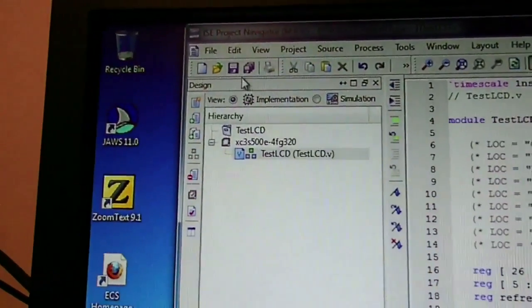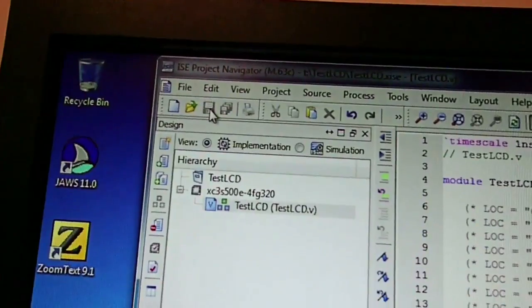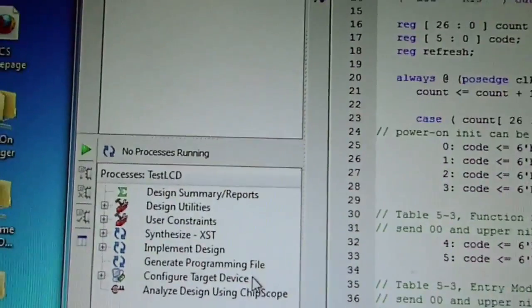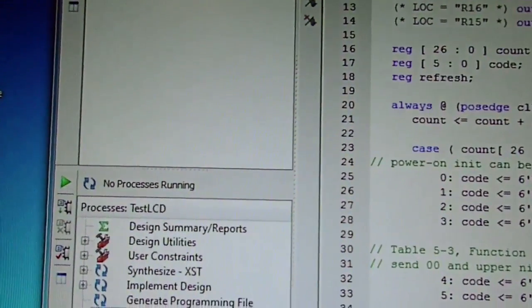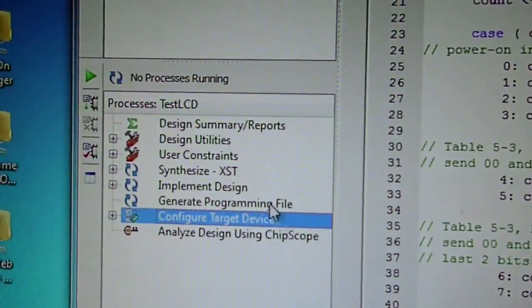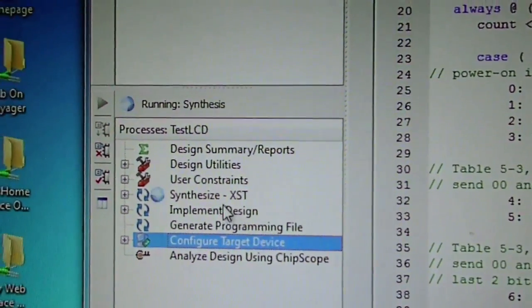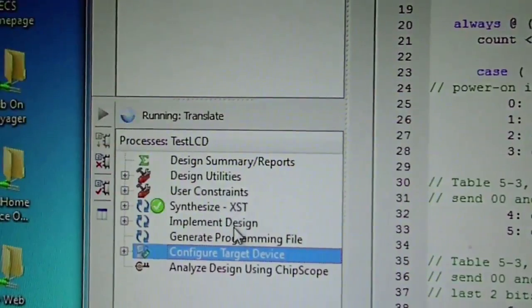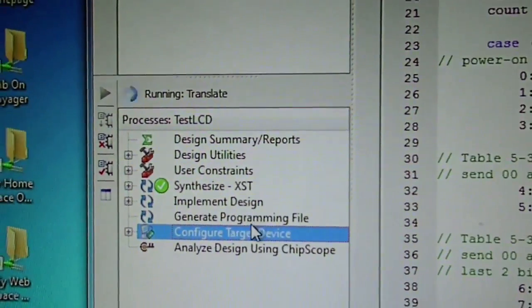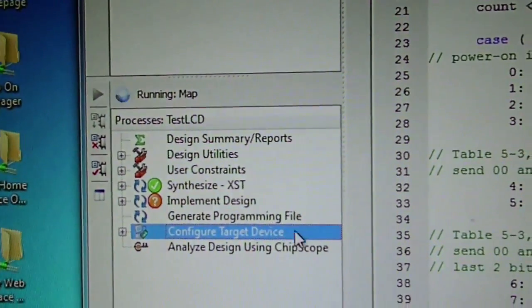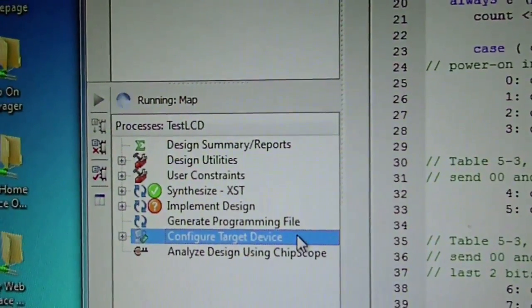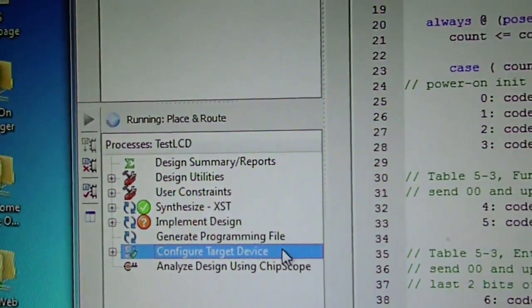We save this file and then compile by double-clicking the configure target device. It will go through synthesize XST, implement design, generate programming file, and come to configure target device. There it will stop.